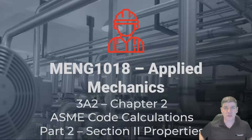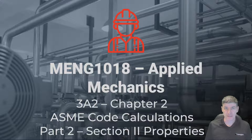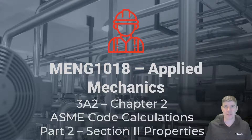This is part two of our introduction to ASME codes. In this section, I'm going to explain one skill that you're going to need in just about every single code calculation, and that's using the materials property table.